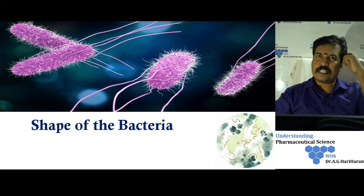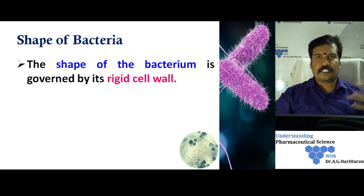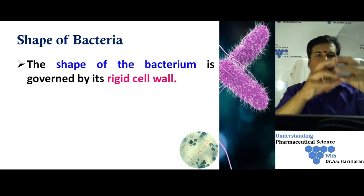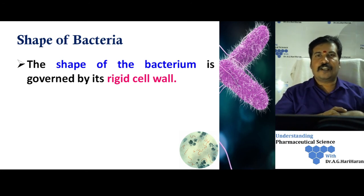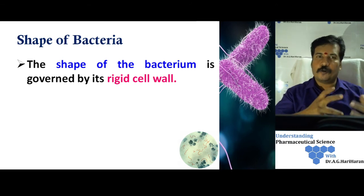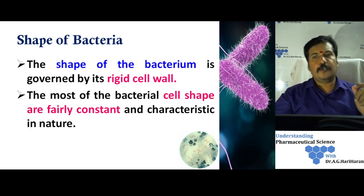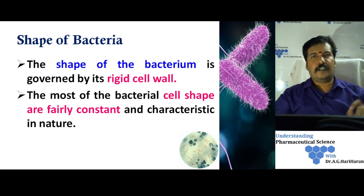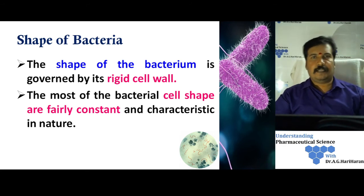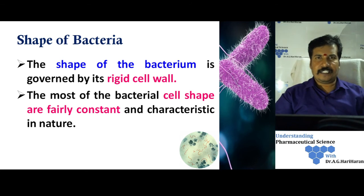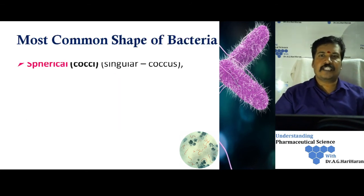The second major morphological characteristic is shape. The shape of bacteria is generally determined by the cell wall, which is made up of peptidoglycan — a relatively rigid material. This shape is unique and almost constant within a particular species of bacteria. For example, Streptococcus has a spherical shape, and E. coli has a bacillus shape, that is a rod shape. This characteristic nature is also helpful in the identification process.